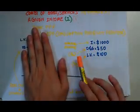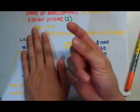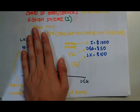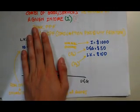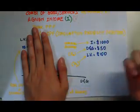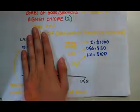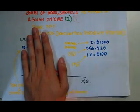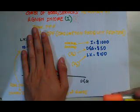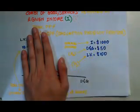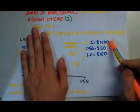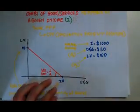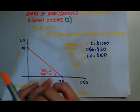Imagine that I have a nominal income — nominal means in terms of numbers — of $1,000, and there are only two branded goods available: D&G and Louis Vuitton. D&G costs $50, so one D&G handbag costs $50. One LV handbag costs $100. The price of D&G, which we'll call X, is $50; the price of Y is $100. If I'm only going to buy D&G, that's $1,000 divided by 50 — that's 20. If I spend all my money on LV, I can only buy 10.